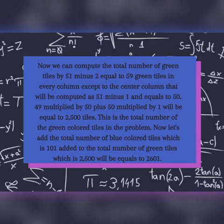Now we can compute the total number of green tiles. 51 minus 2 equals 49 green tiles in every column except the center column, which will be computed as 51 minus 1 and equals 50.